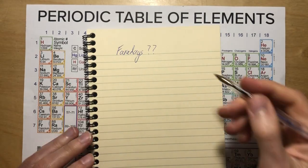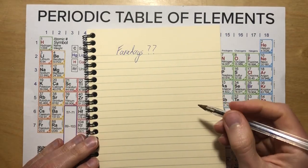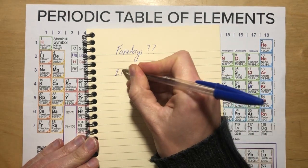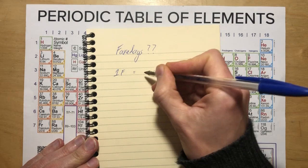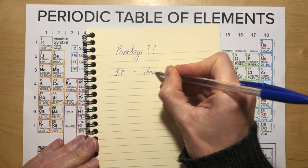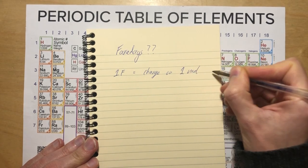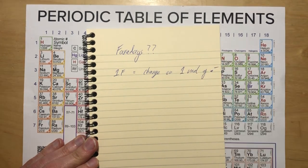Okay, a super quick video. What are Faraday's when we're doing electrolysis in chemistry? One Faraday is defined to be the charge on one mole of electrons, on one mole of E minus.